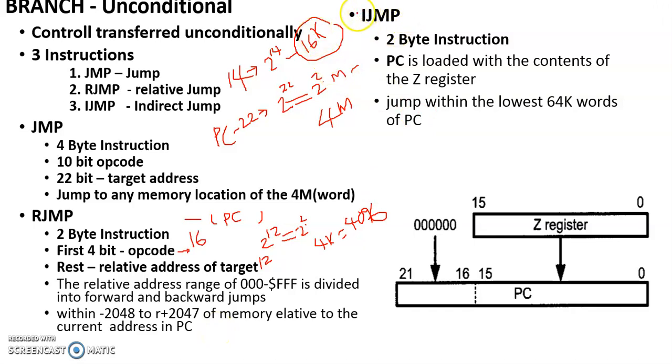IJMP is a 2-byte instruction. The program counter is loaded with the content of the Z register. The Z register is a 16-bit register.